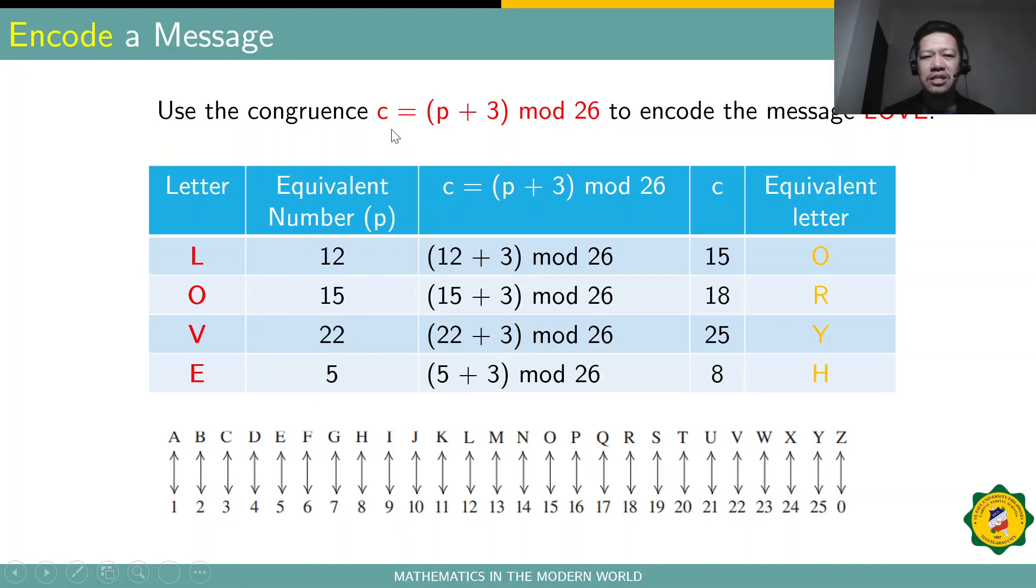So, if we were going to encode this using this congruence modulo here, we just add 3 to the value of P here, and then you get modulo 26. So, 12 plus 3 modulo 26, that will be 15. Modulo 26, it's 15, isn't it? We learned that in our previous video on modular arithmetic. So, we have here 15, P plus 3 modulo 26 gives you 18, 22 plus 3 is 25 modulo 26 is 25, and 5 plus 3 is 8 modulo 26 is 8. So, those will be the values of C.